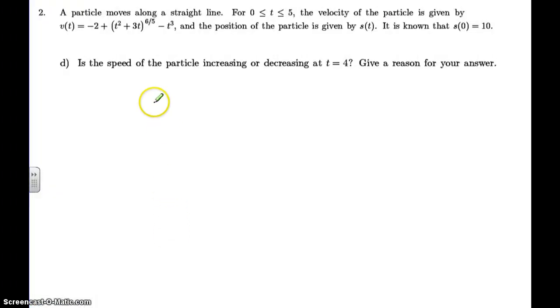Okay, is the speed of the particle increasing or decreasing at t equals 4? That's part D. The key here is the word speed. Speed is the absolute value of velocity. Here's how we're going to tell when the speed is increasing, is when the derivative of the speed is, or actually, I'm sorry, when the speed is the same sign as its derivative at that point in time. So if the derivative is positive, which is acceleration, and the velocity is positive, then it's increasing. If they're both negative, it's increasing. And if they're different signs, then we know the speed is actually decreasing at this point in time. So, here we go.